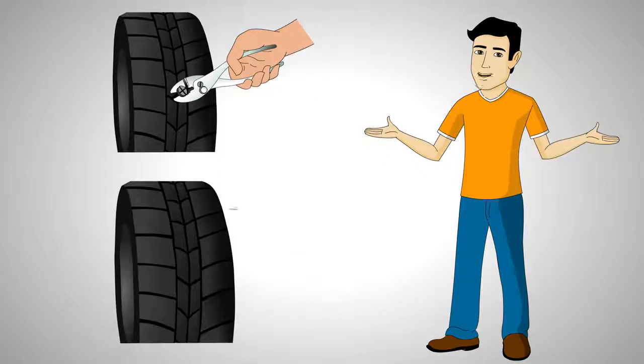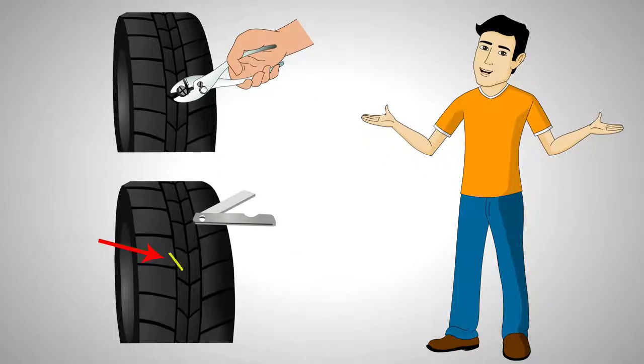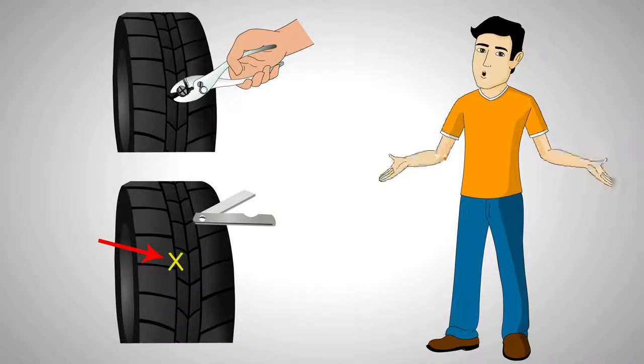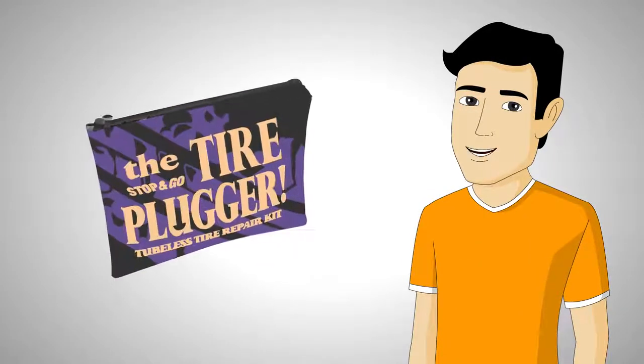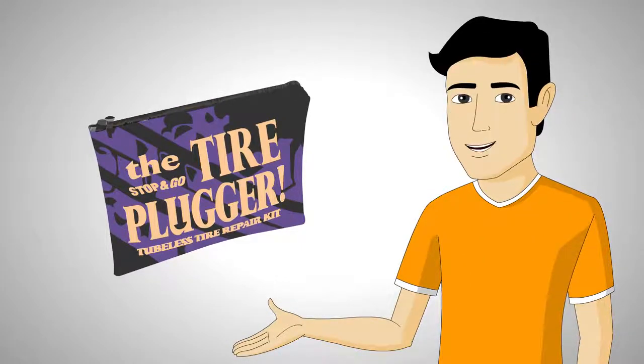Once you pull on the stem with your pliers, simply air up the tire and trim the stem with the enclosed retractable razor. All this is packed in a handy, zippered carrying case that stows easily.